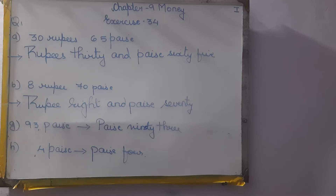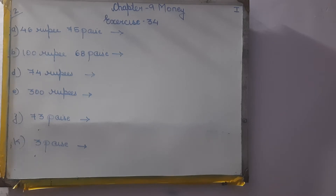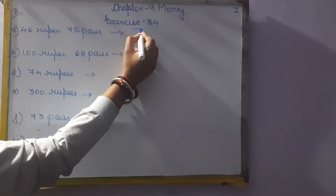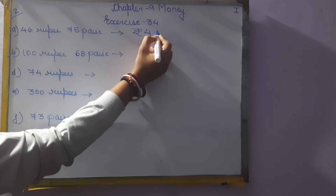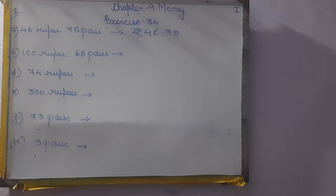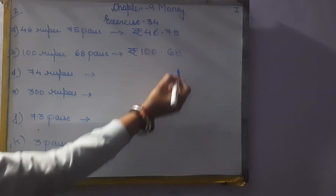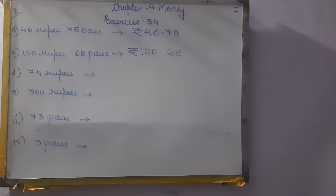Now question number 2: Write the following amount in figures. There are 12 questions in which we are going to do F, G, H and L. First one: 46 rupees 75 paise. The symbol of rupee is used. Rupees 46.75. Next is 100 rupees 0.68, meaning 68 paise.